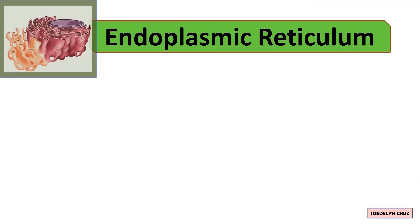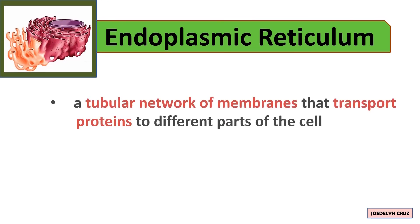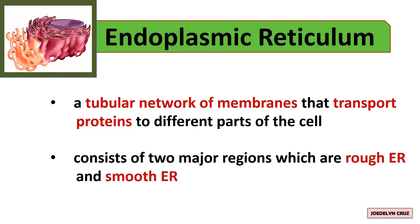Endoplasmic reticulum is a tubular network of membranes that transport proteins to different parts of the cell. It consists of two major regions, which are rough endoplasmic reticulum and smooth endoplasmic reticulum.